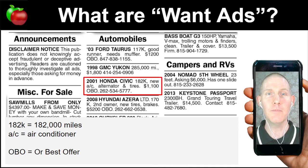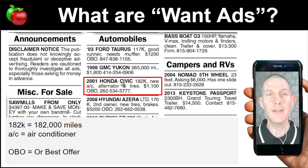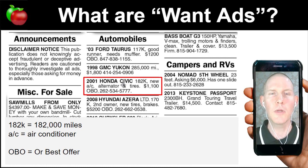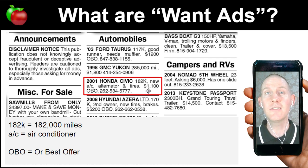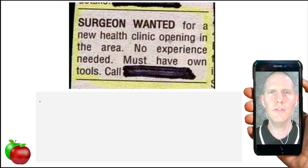One thing to mention about want ads: it's very common for people not to use correct English, because they only have a small section to write in. To be grammatically correct would require more words, meaning a larger ad and more money paid to the newspaper. So people use fragments, incomplete sentences, and throw out articles — because they want to get across the quickest information possible.